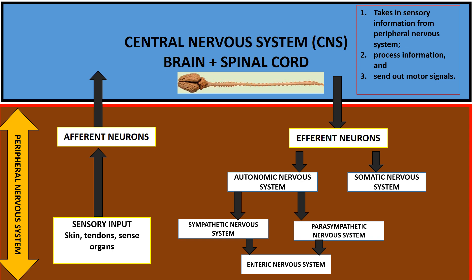This information gets to the brain, is processed, and then sent back to effector organs via efferent neurons. These efferent neurons operate at two levels: voluntary, which represents the somatic nervous system, and involuntary, which represents the autonomic nervous system.